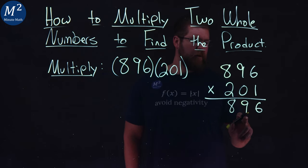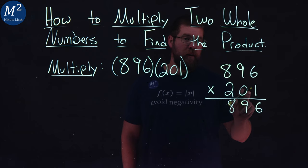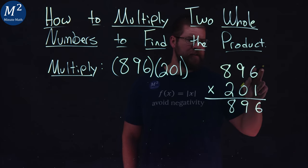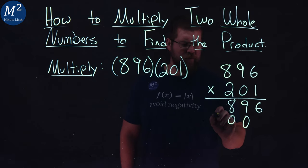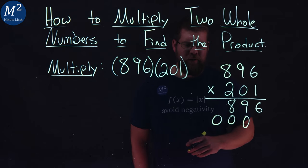Now we go place value here, we start at the tens place in the second number, 201, and we have 0. 0 times 6 is 0, 0 times 9 is 0 and 0 times 8 is also 0. I love it when there's 0s.